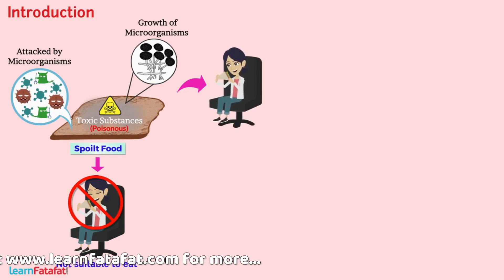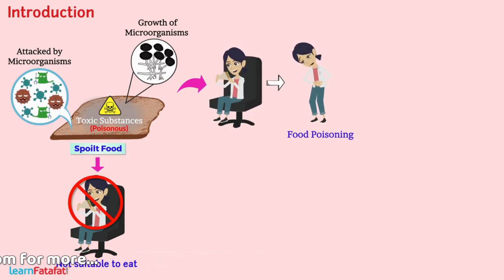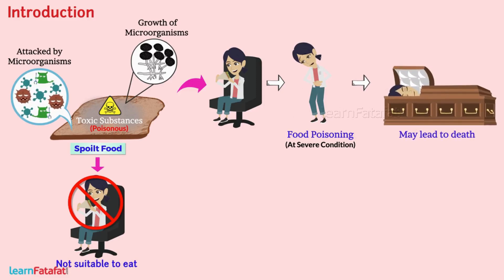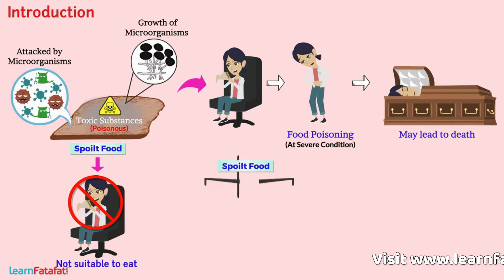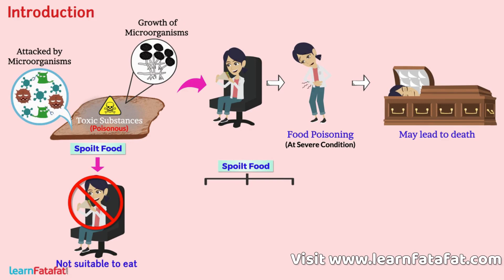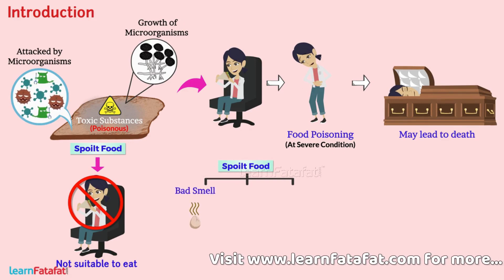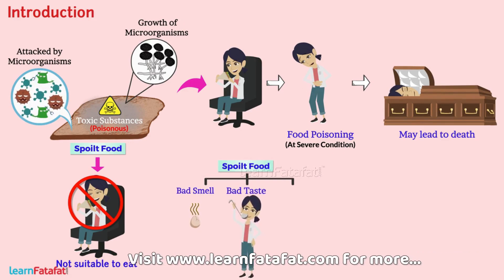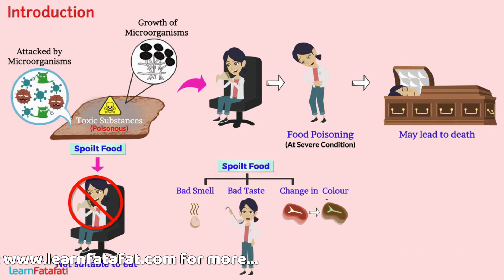Eating spoiled food leads to food poisoning. At severe conditions, it may lead to death. So, how can we identify spoiled food? Well, spoiled food has bad smell, bad taste, and change in colour.